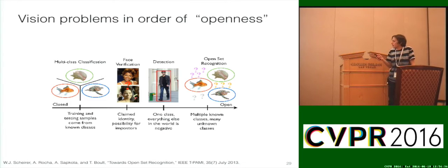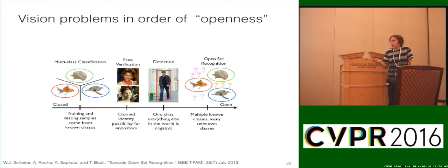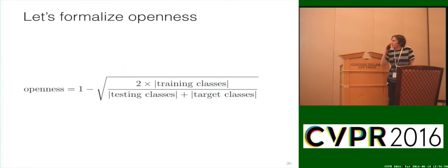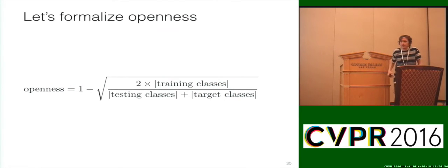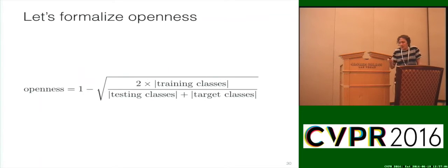Formalizing openness: Terry and I have offered the following definition where you can take a data set available for evaluation. There are three categories of classes: training classes, which could be positive and/or known negative classes; target classes — the positive classes you're interested in labeling; and testing classes, which could be massively large. If we're doing good open set-style testing, we want a very large sampling of unknowns.